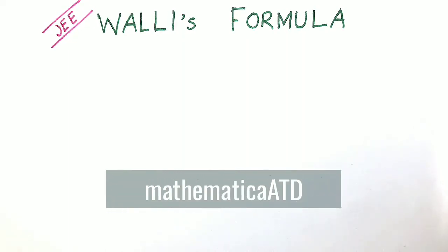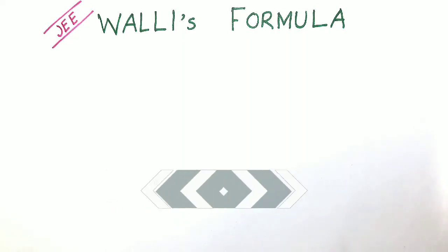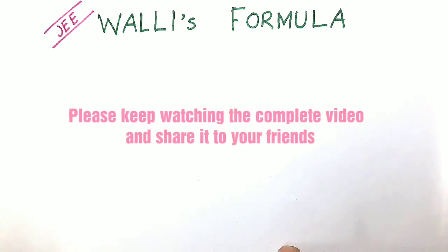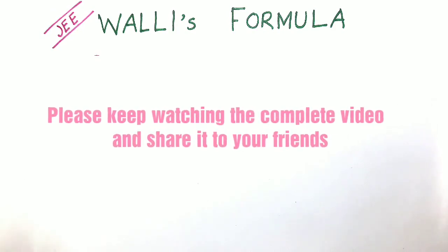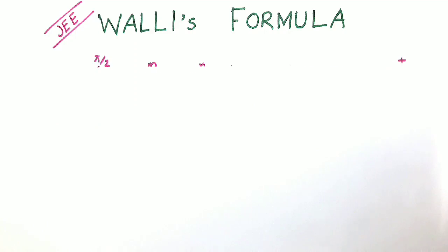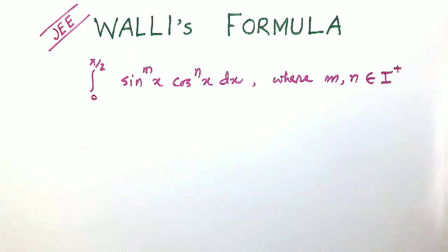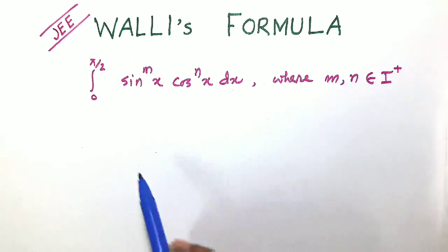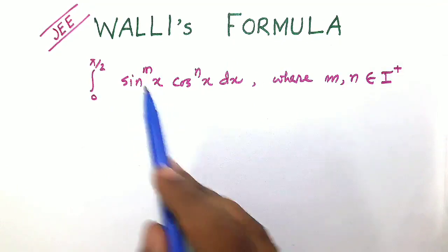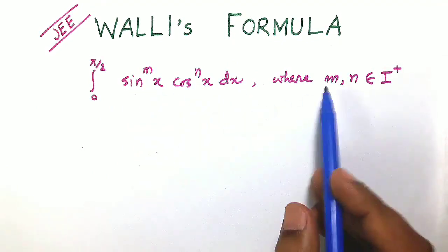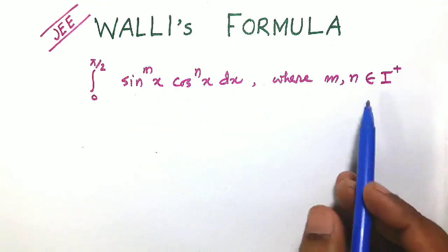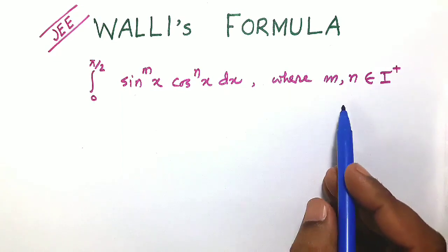Welcome back friends. This is Wallis formula — the most important formula of definite integration. In this section you will find how to evaluate integration from 0 to pi by 2 of sin x to the power m into cos x to the power n dx, where m and n are both positive integers.